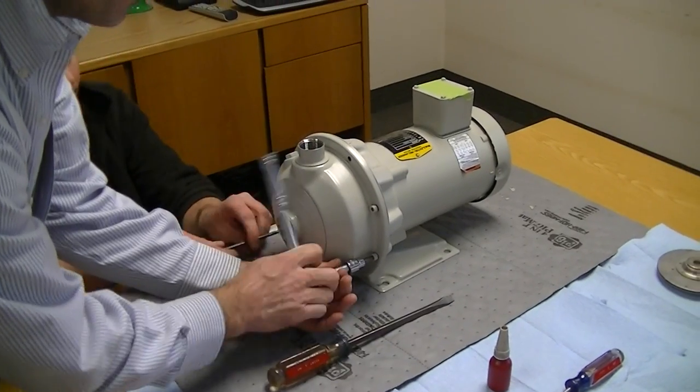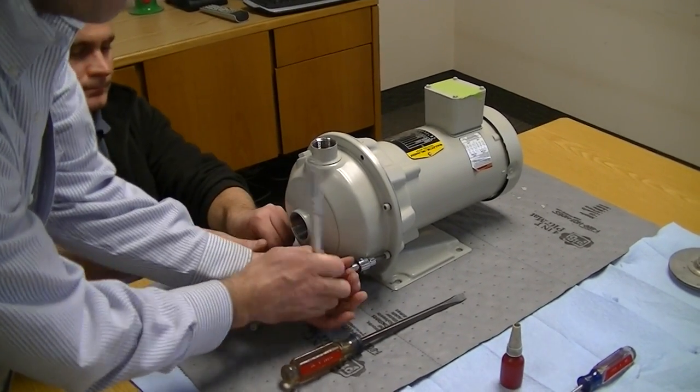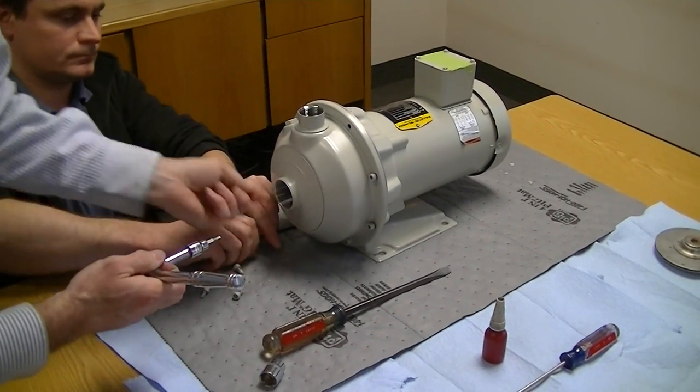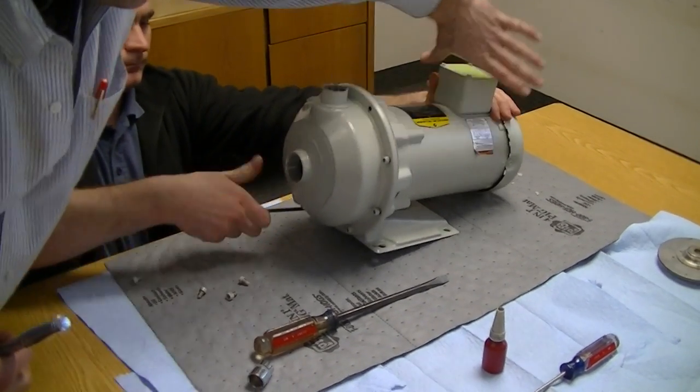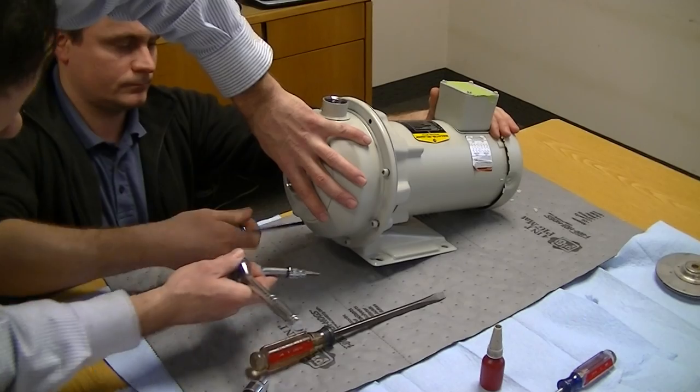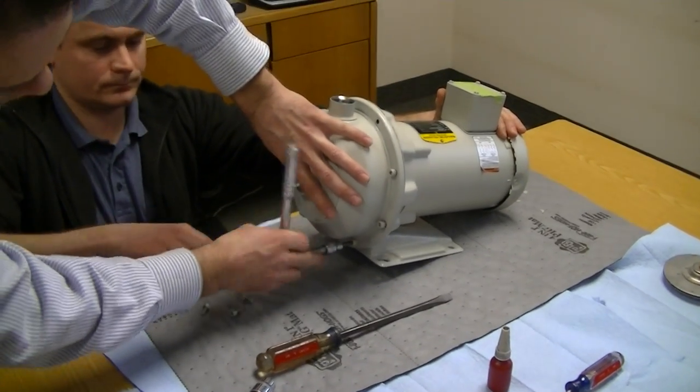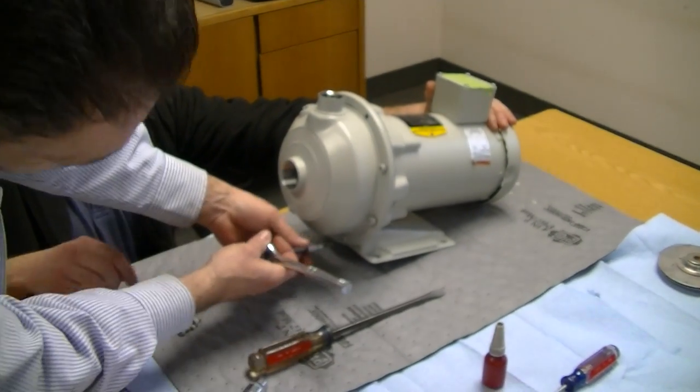Now we're going to use this Allen wrench just to speed things up a little bit. After you get all these off, this volute will come right off. Whether you have pipes on it or not really doesn't matter. You can just take this section right out and leave this connected on the unit. You don't have to take the whole entire pump out.